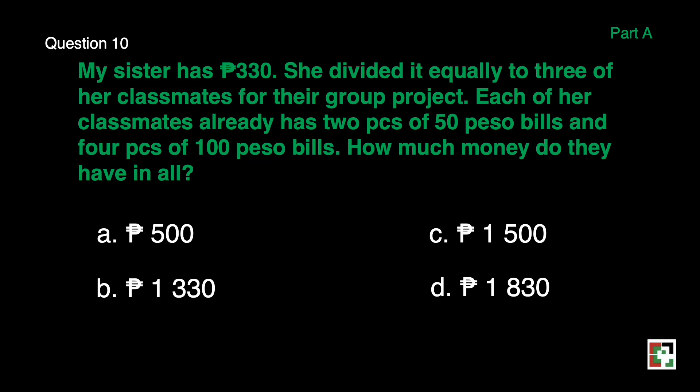Question number 10. My sister has 330 pesos. She divided it equally to 3 of her classmates for their group project. Each of her classmates already has 2 pieces of 50 peso bills and 4 pieces of 100 peso bills. How much money do they have in all? A, 500 pesos. B, 1,330 pesos. C, 1,500 pesos. And D, 1,830 pesos.